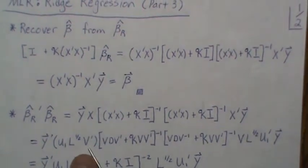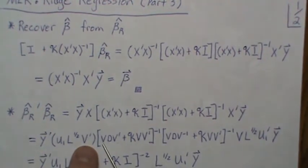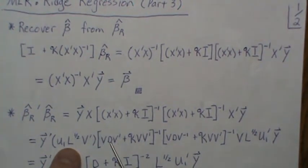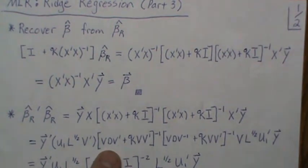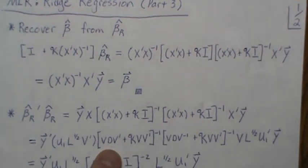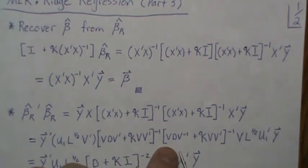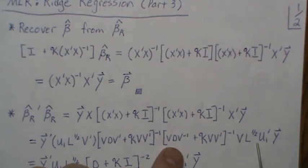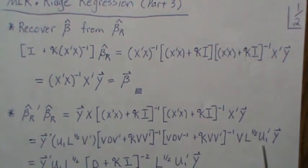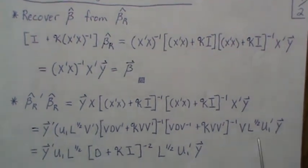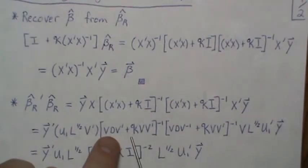This is the spectral decomposition of X transpose X. These are orthonormal eigenvectors, and this V is the same as this V. L is a diagonal matrix of eigenvalues, D is a diagonal matrix of eigenvalues, this is the identity matrix.